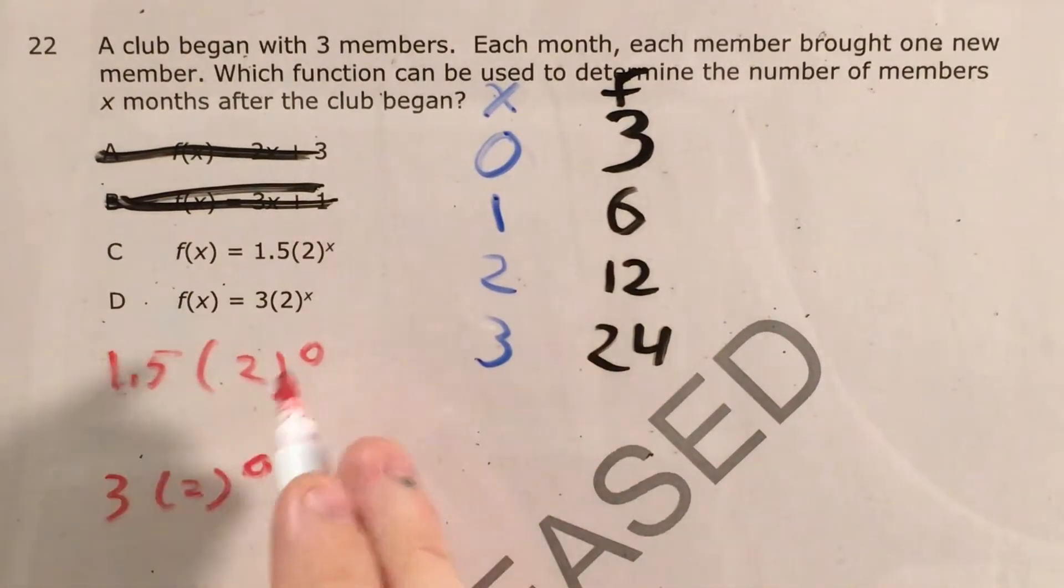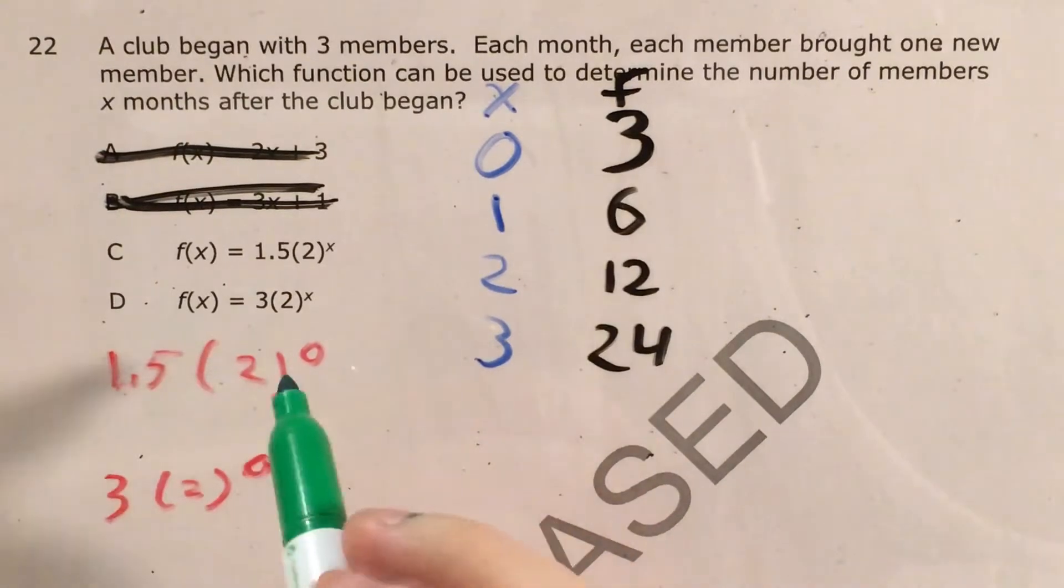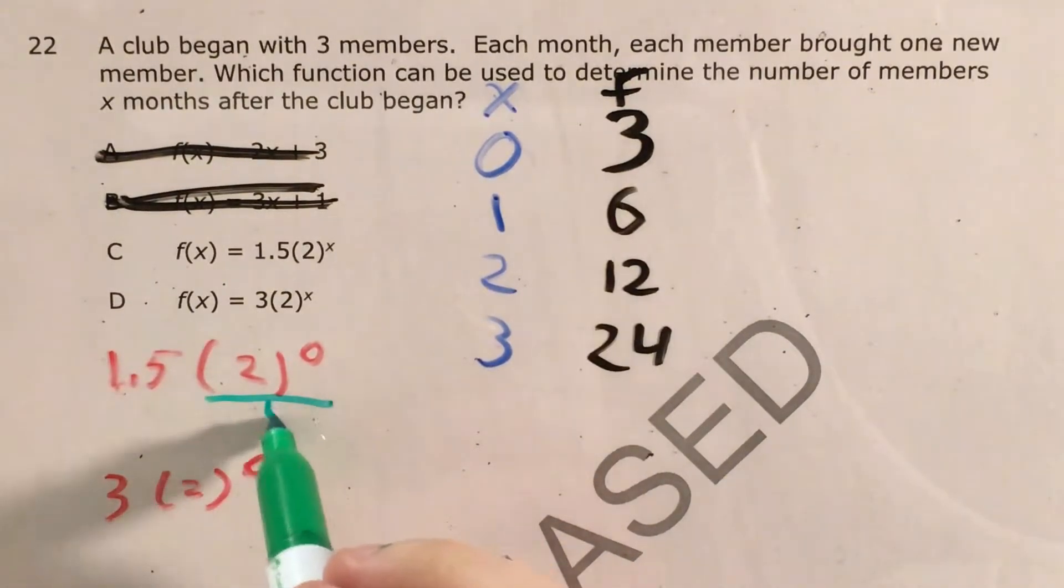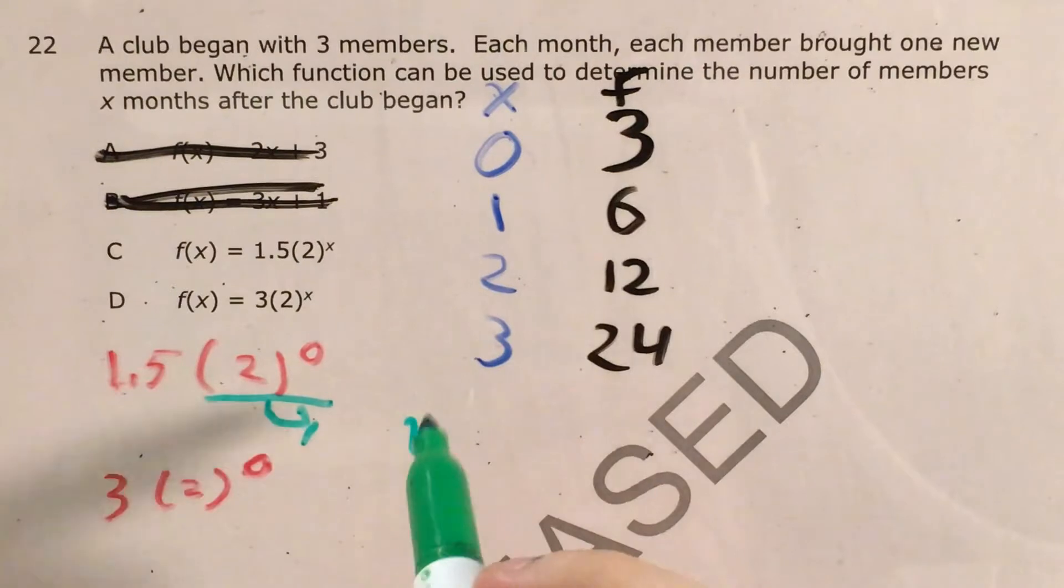Because 1.5 times two to the zero and three times two to the zero will give us different answers. And that will actually lead us to determine what the correct answer choice is between C and D. Now to raise something to the zero power, as long as your base isn't zero, anything to the zero power equals one.